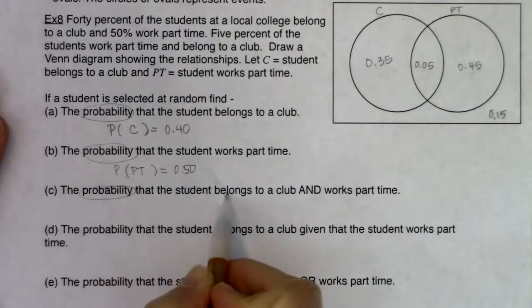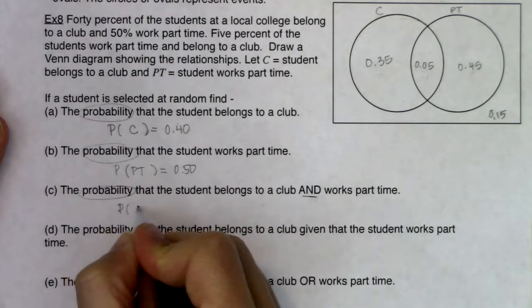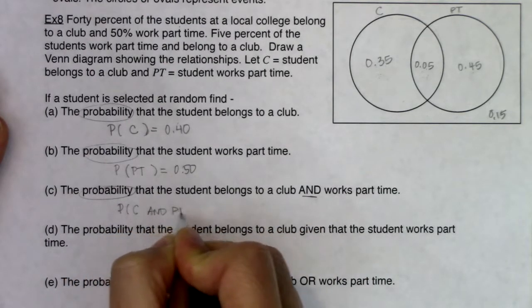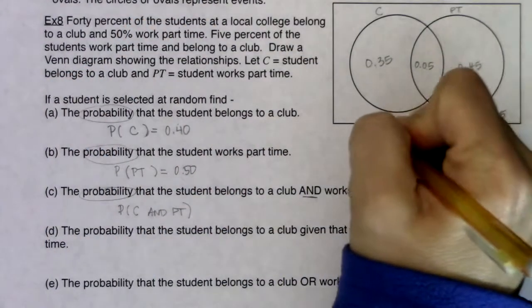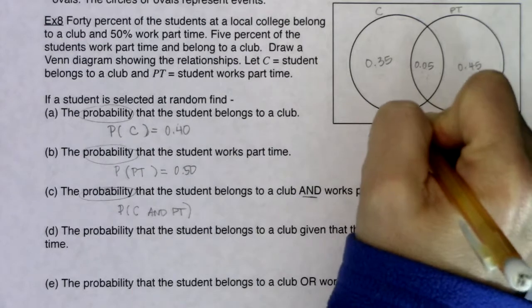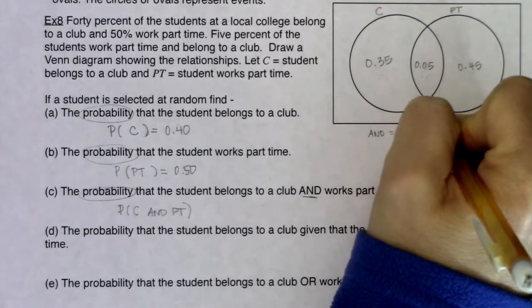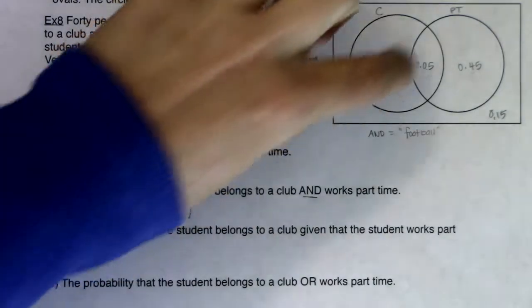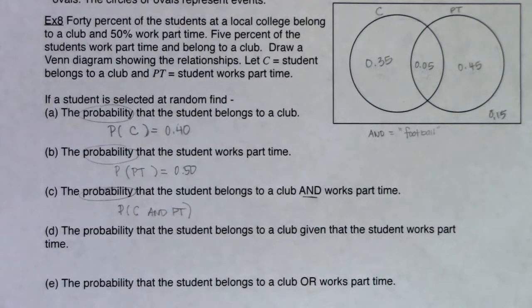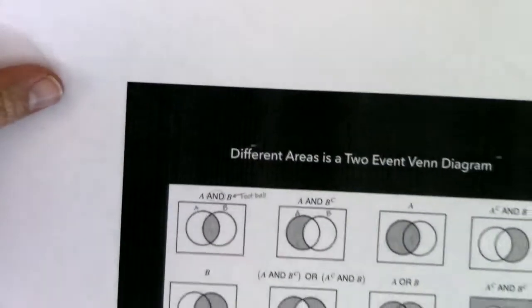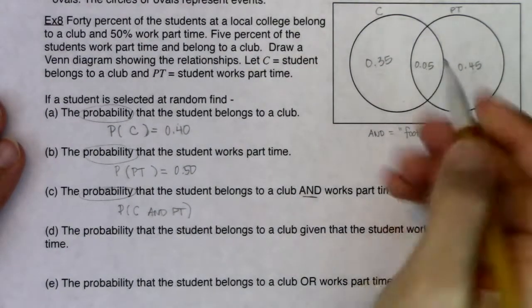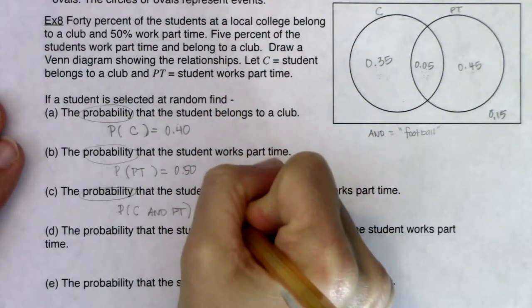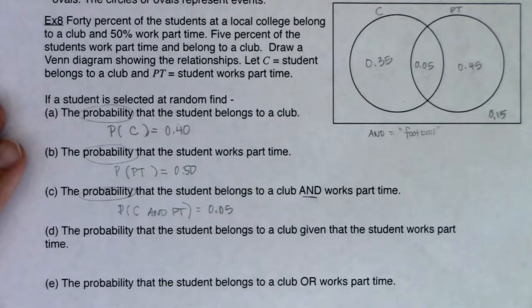The probability a student belongs to a club and works part-time — in a Venn diagram, the 'and' equals the football. So P(C and PT) equals 0.05. These probabilities were all given as relative frequencies, so they're already numbers between zero and one.